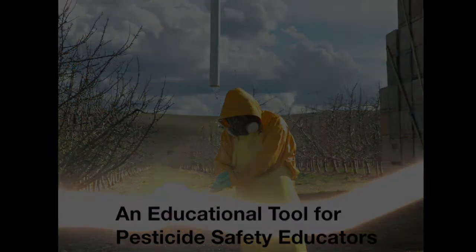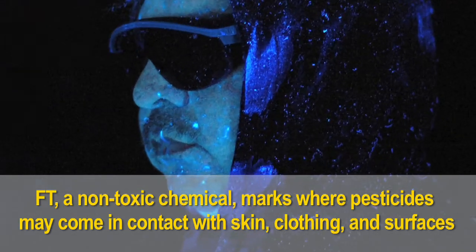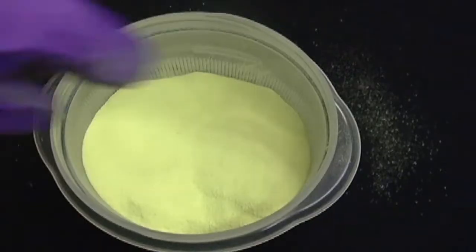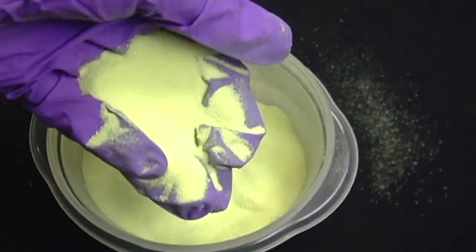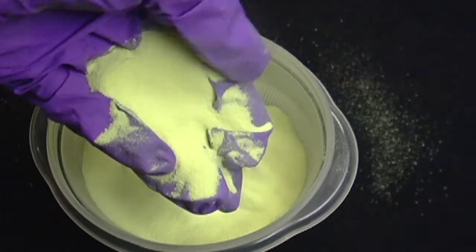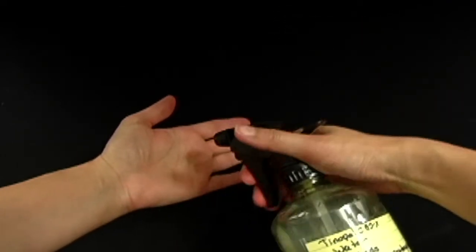The fluorescent tracer, or FT technique, is a way to mimic pesticide contamination. This non-toxic chemical is used to mark areas where pesticides may come in contact with skin, clothing, and surfaces. Like some pesticides, fluorescent tracers are invisible and cannot be seen when mixed, diluted, and applied under normal lighting.